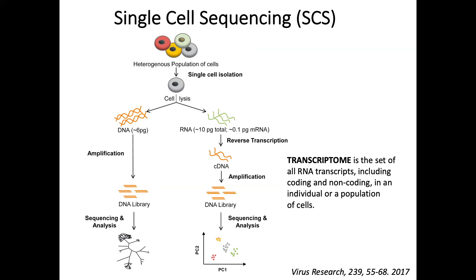For example, in cancer, sequencing the DNA of individual cells can give information about mutations carried by a small population of cells. In development, sequencing the RNA expressed by individual cells can give insight into the existence and behavior of different cell types. Single cell sequencing allows analysis of the genome or transcriptome of individual cells depending on which materials you start with — genomic DNA for genome analysis, or RNA for transcriptome analysis.